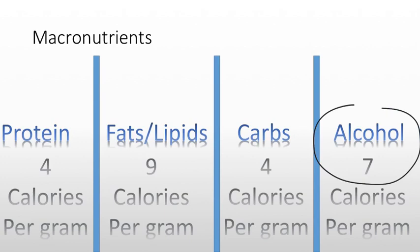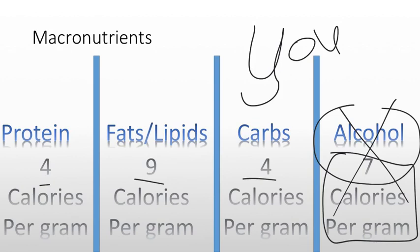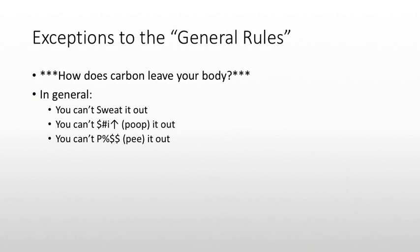Also: alcohol has seven calories per gram. Remember the conversion factors — four, nine, four — and leave alcohol out of your diet, at least while you're trying to lose weight.